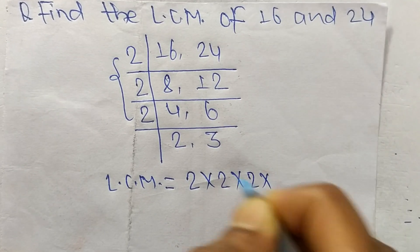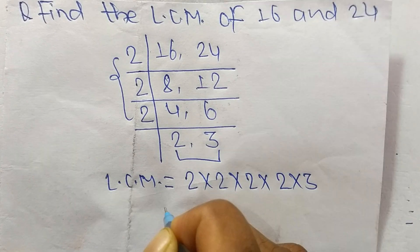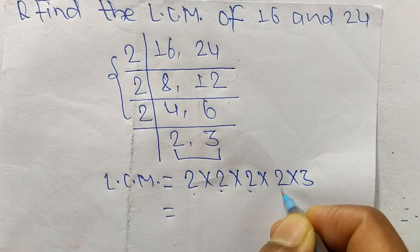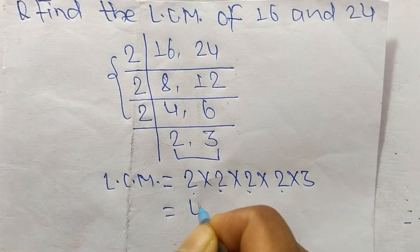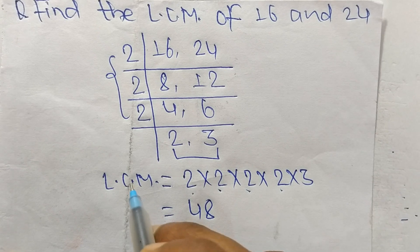And from this part it is 2 times 3. So 2 times 2 mean 4, 4 times 2 is 8, 8 times 2 is 16, 16 times 3 mean 48. So 48 is the LCM of 16 and 24.